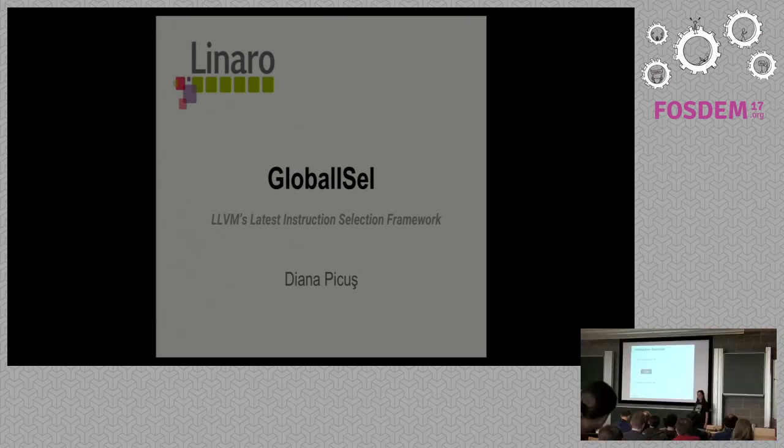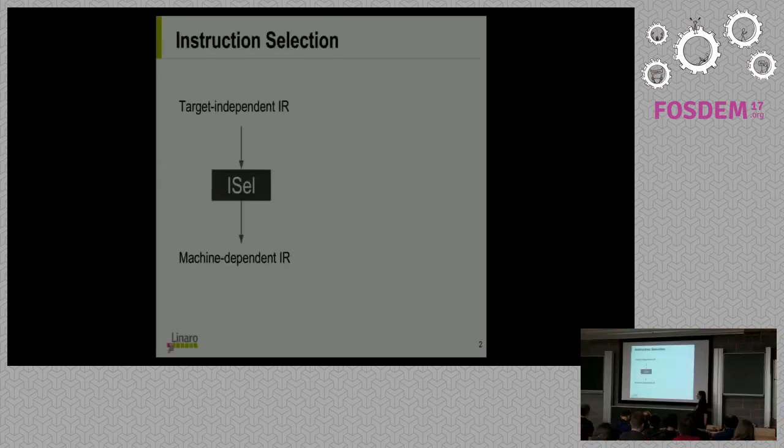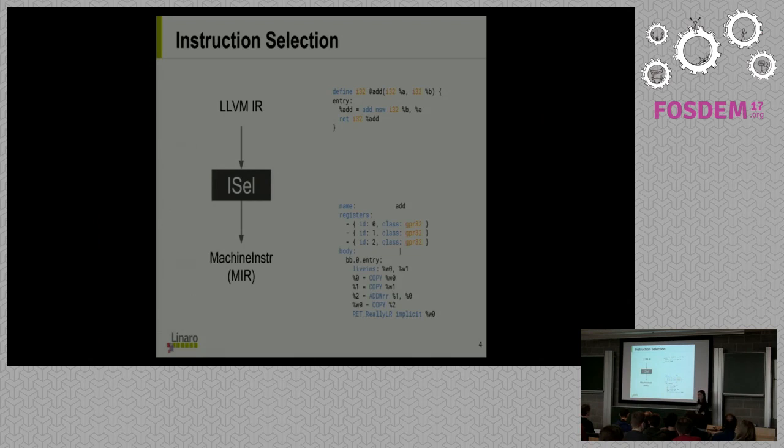First, so we're all on the same page: instruction selection is a phase in the compilation process where code is translated from the target-independent intermediate representation used by the middle end into the machine-specific representation used by the back end. In our case, this is the LLVM IR, which we all know and love, hopefully, and machine instruction or machine IR or MIR, which may be new to some of you if you've never worked in the back end. We're going to talk about it.